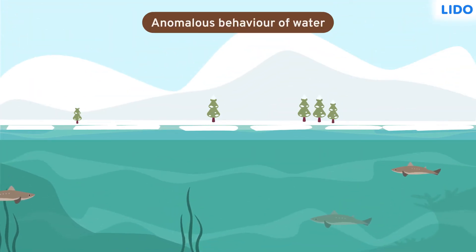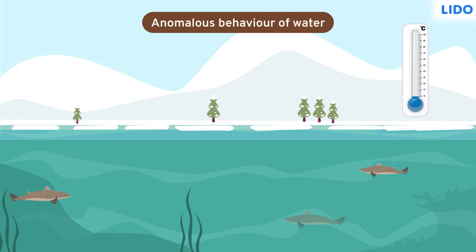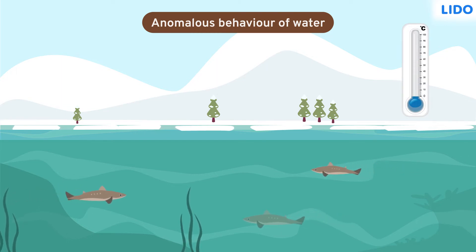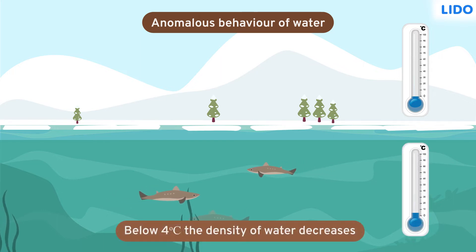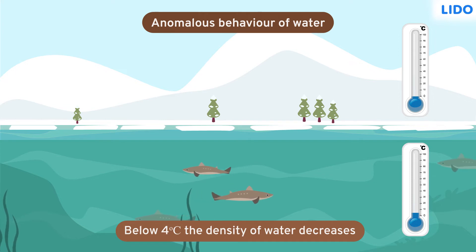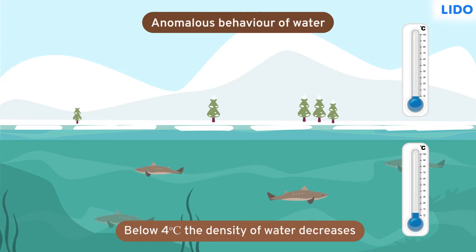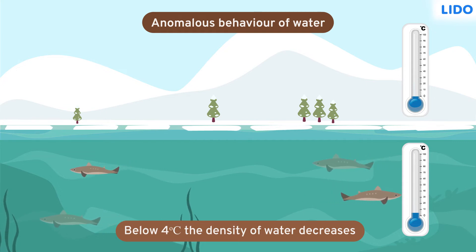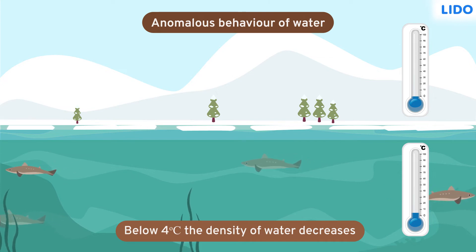Look at the lake. The water on the surface cools down and freezes. But while cooling, it expands. As a result, its density decreases. Because of lower density, ice floats on the water and the water of higher density remains below. This keeps the lake warmer so the fish can not only survive in the lake but also swim in the water.